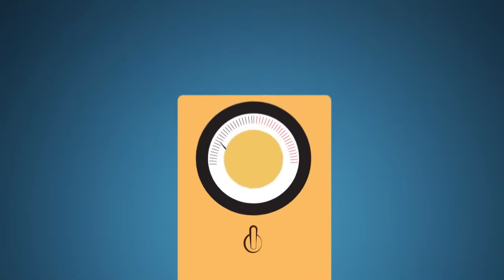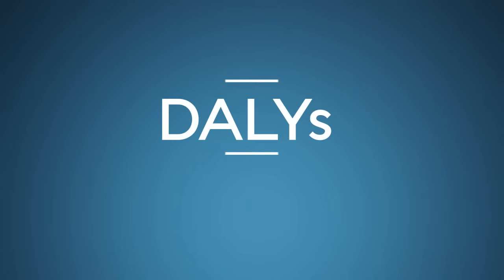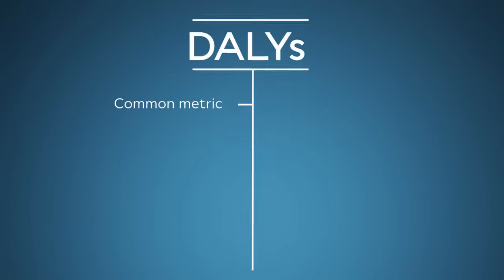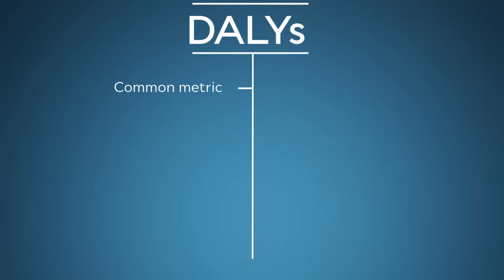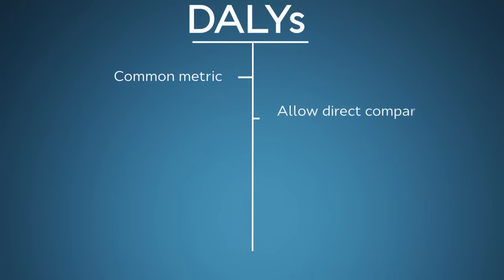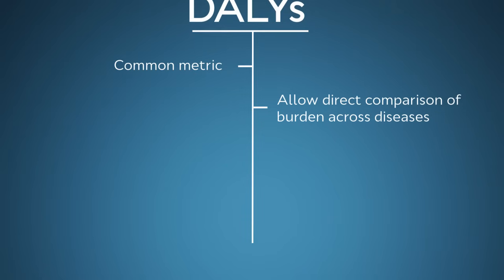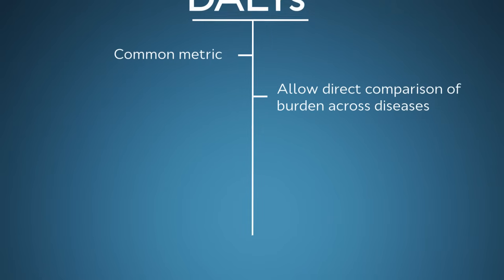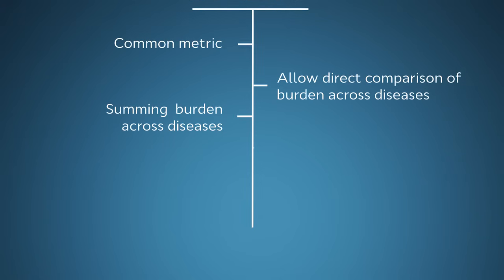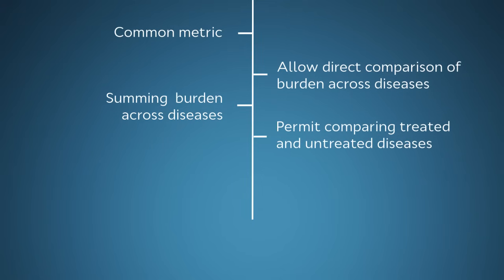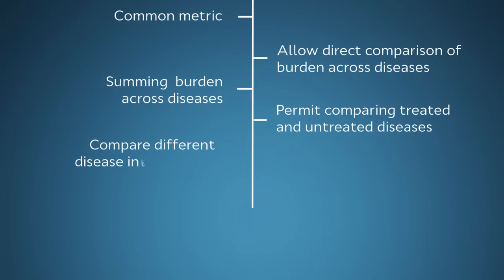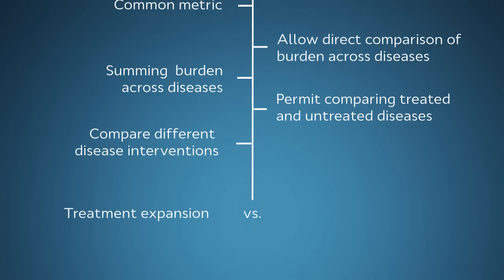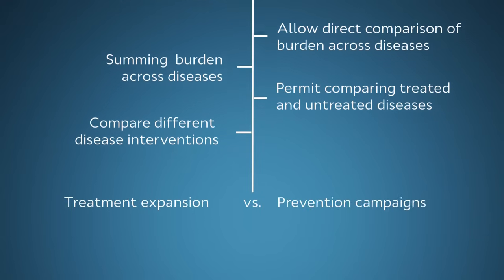Thankfully, there is. It's called a DALY, and it's exactly what you need. In technical jargon, it's a common metric that solves the pineapple, banana, broccoli non-comparability problem. DALYs allow direct comparison of the burden of different diseases. They also allow summing burden across diseases, comparing treated and untreated disease, and even make it possible to compare different types of interventions, such as treatment expansion versus prevention campaigns.